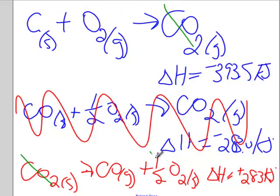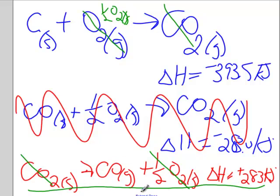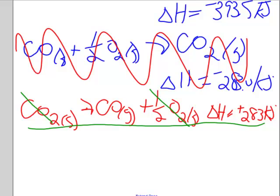This half an O2 is going to cancel with this, or half of this O2, and leave me with a half an O2. Now, I've got carbon plus half an O2 goes to CO. I can add those right up just like I would do simultaneous equations in math class.